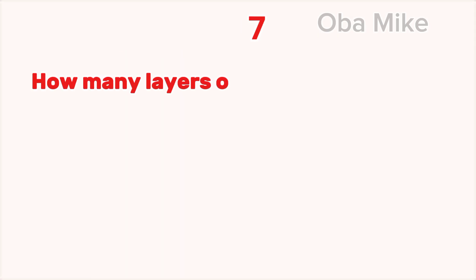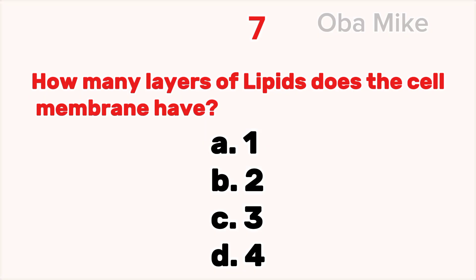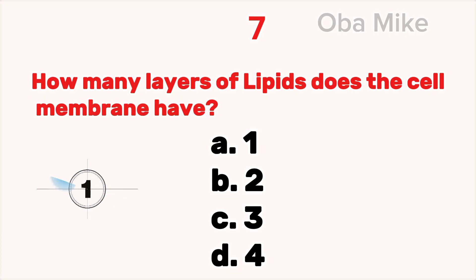7. How many layers of lipids does the cell membrane have? A. 1, B. 2, C. 3, D. 4. The correct answer is B. 2.